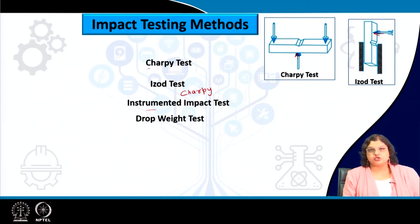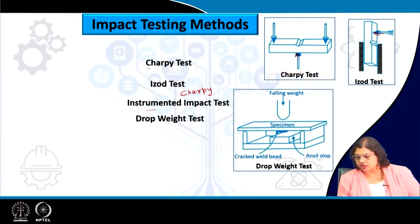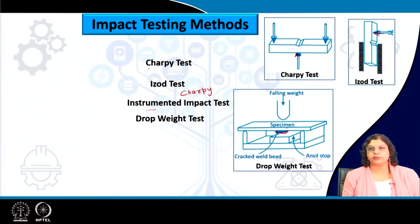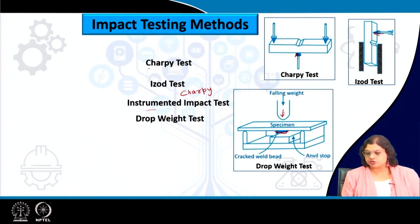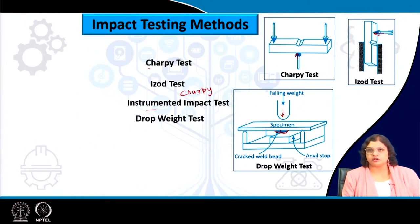There is a drop weight test in which the specimen is placed with a weld beneath it and some weight is impacted from the top, so that a crack initiates from that part. This is typically done at different temperatures to figure out at what particular temperature, with the same amount of weight and strain rate, a crack initiates.